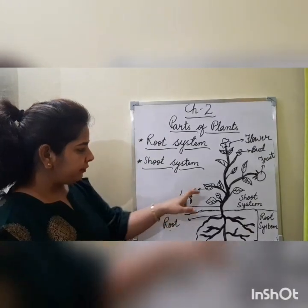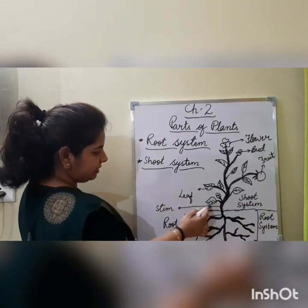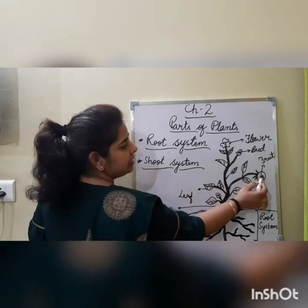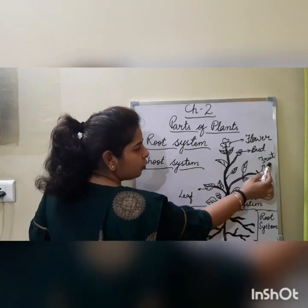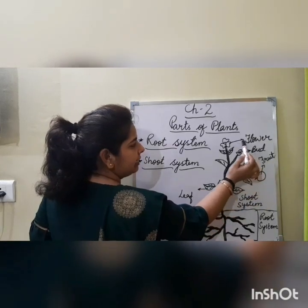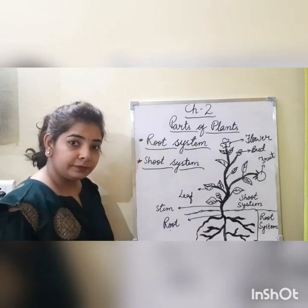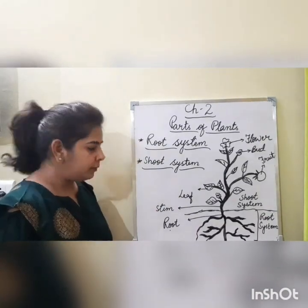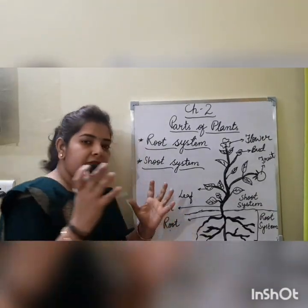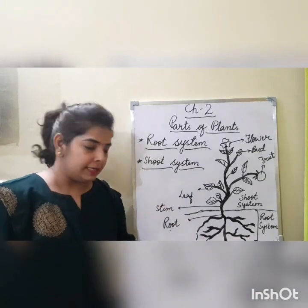Leaf, stem — this part is stem. This is fruit. This is bud. And this is flower. Now, what does our root do?